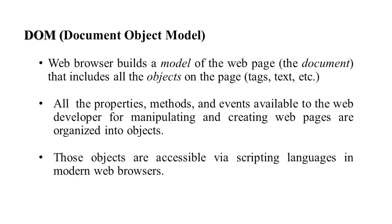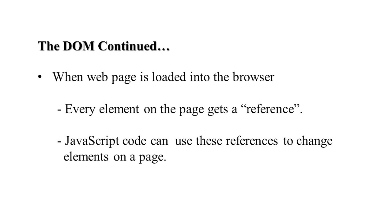The web browser builds up a model of the web page, which includes objects of the page — every element, tag, and text. All properties, methods, and events available to the web developer for manipulating and creating web pages are organized into objects and into one hierarchical structure. These objects are accessible through scripting languages like JavaScript. When a web page is loaded, every element gets a reference, and JavaScript uses these references to change, add, or modify elements and tags on the page.